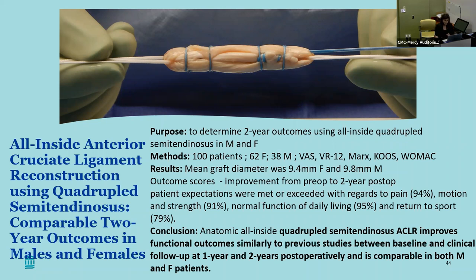In God we trust, all others bring data. We looked at 100 patients who all had the same surgical technique with a quadrupled semitendinosus tendon — no one received smaller than a nine-millimeter graft. The mean graft diameter for females was 9.4mm and for males 9.8mm. Two-year outcomes were comparable: outcome scores were not lower for our females, and the risk of revision or retear was no different between males and females.